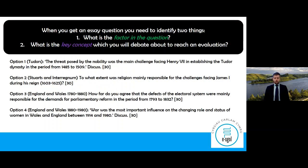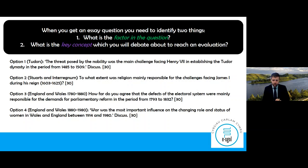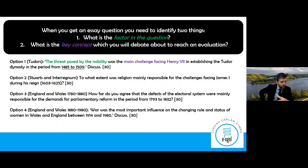When you get a question from your teacher to answer, the first things you need to do are: number one, identify what is the factor in the question; number two, identify what is the key concept which you will debate to reach an evaluation. So we'll look at some examples. Option one, on the Tudors: 'The threat posed by the nobility was the main challenge facing Henry VII in establishing the Tudor dynasty in the period 1485 to 1509. Discuss.' Our factor is the threat posed by the nobility. Our key concept is the main challenge facing Henry VII.